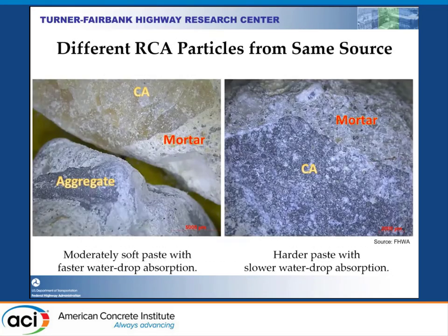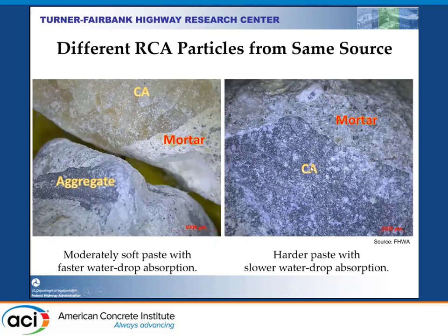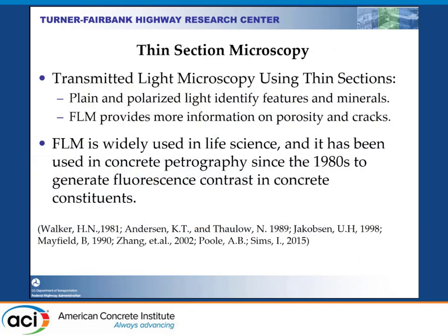Some photographs show different RCA particles from the same source. On the left, the top shows a gravel coarse aggregate, mostly coarse, with a mortar that is a beige color — when you scratch it, it's moderately soft, and when you drop water, it absorbs faster. Whereas on the right-hand side, it is a crushed coarse aggregate; the paste color in the mortar is gray, and if you drop water, it seeps slowly. From thin section microscopy, using transmitted light microscopy and reflected light microscopy — basically PLM and FLM.